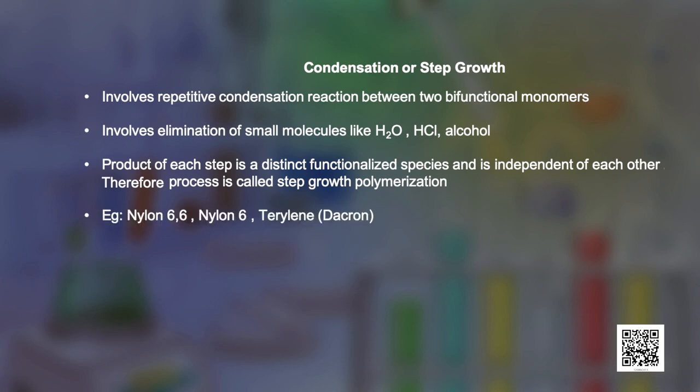As shown here, the reaction of ethylene glycol and terephthalic acid to form terylene is an example of this type of polymerization. In order to understand the chemistry of various reactions, it is important to learn about their mechanisms, and we will now talk about free radical mechanism.